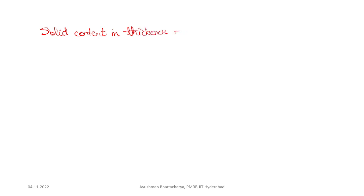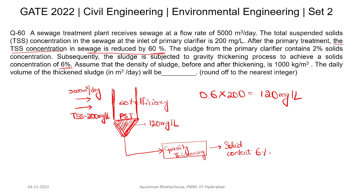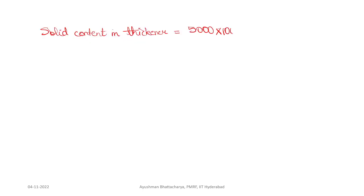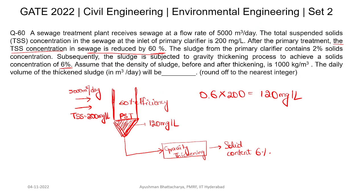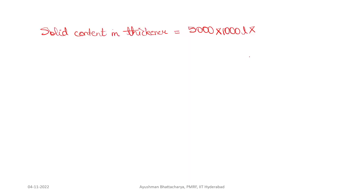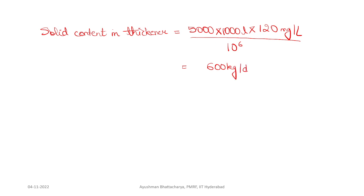The sludge solid content going to the gravity thickener equals total flow rate 5000 m³ per day. Converting to liters: 1 m³ = 1000 liters. So 5000 × 1000 liters × 120 mg per liter of solid. To convert mg to kg, divide by 10⁶. This gives 600 kg per day — which is the solid content going to the gravity thickening process.